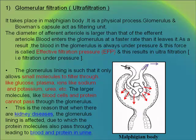The glomerulus lining allows only small molecules to filter through, such as glucose, plasma, ions like sodium and potassium, and urea. Larger molecules like blood cells and proteins cannot pass through. In kidney disease, the glomerulus lining is affected, causing protein molecules to pass through as well, leading to blood and protein in the urine.